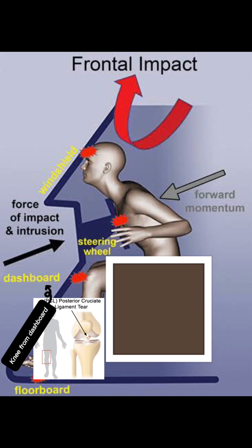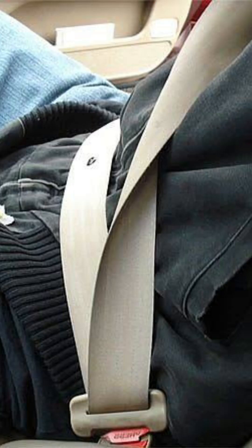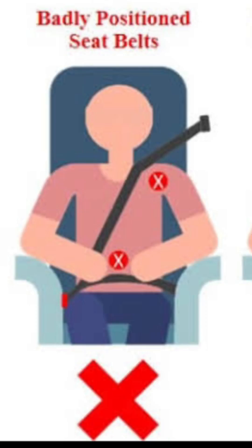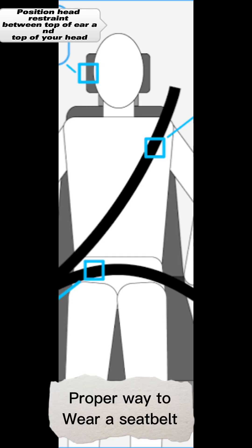Blunt trauma to the knee causes posterior cruciate ligament tear. Bad seat belt positions are: number one, wearing a loose or twisted seat belt; number two, seat belt near the neck, which can cause neck injuries; number three, seat belt around the abdomen, which can lead to abdominal trauma and life-threatening injuries.